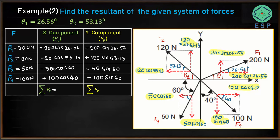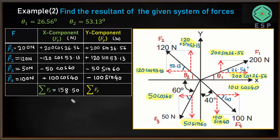To find the sum of all x-components, we add all of them together. The summation of Fx comes out to be 158.50 newtons. Similarly, adding all the y-components together, the summation of Fy is 77.85 newtons. All values are in newtons throughout this calculation.